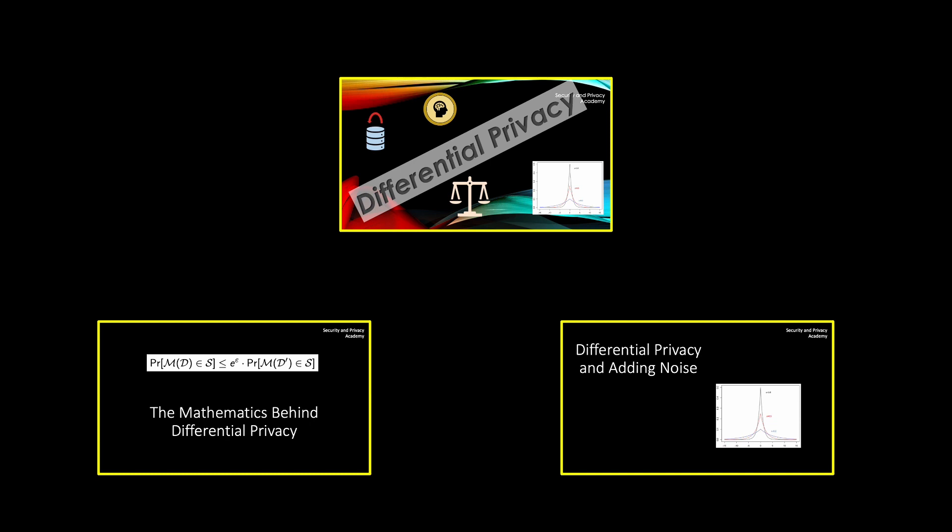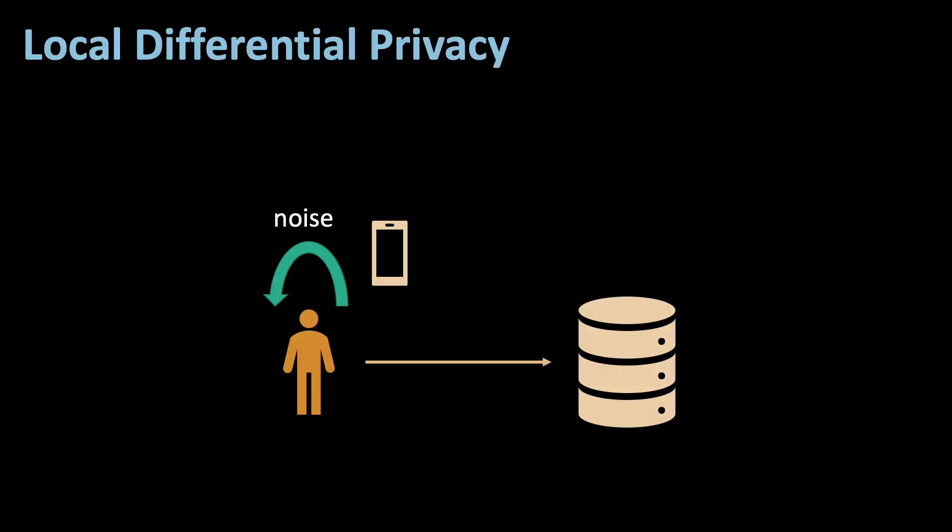I explain local differential privacy in the differential privacy video as well. In short, local differential privacy perturbs data on a user's device before sending it to a data curator. This way, the curator doesn't need to be trusted as it never receives any raw data.